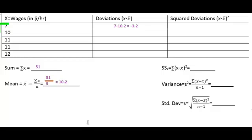Similarly, doing the rest of these, we get 10 minus 10.2, or negative 0.2. Next one would be 0.8, 0.8 again, and finally 1.8.